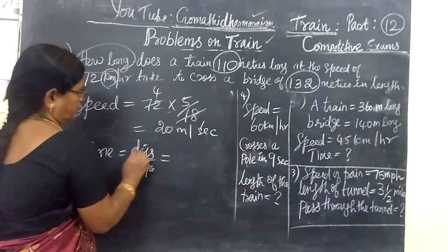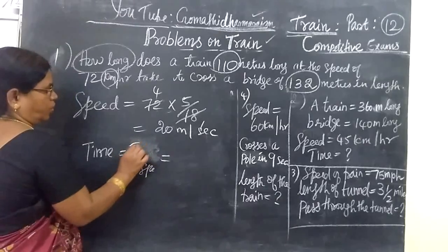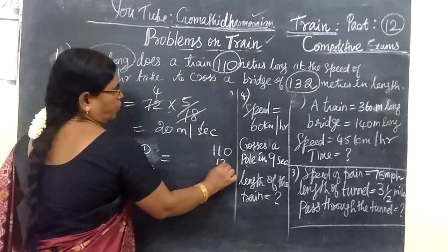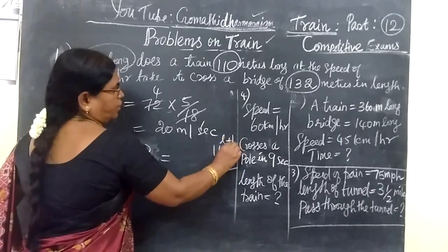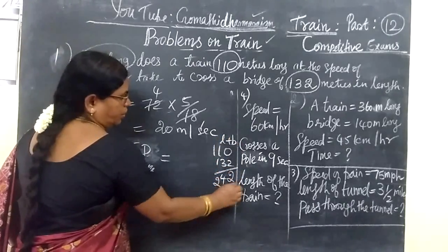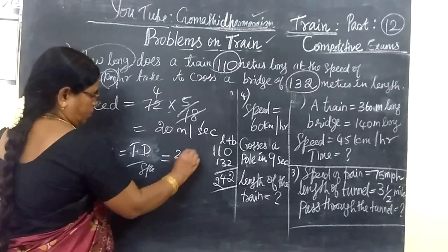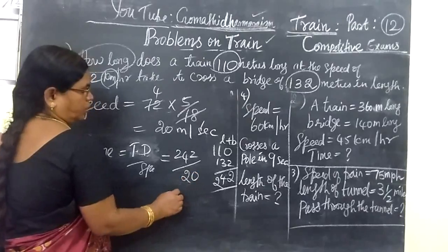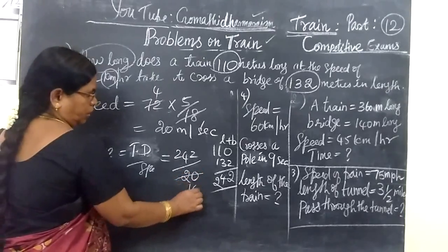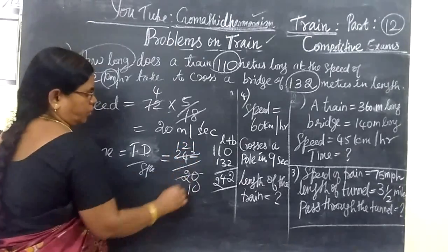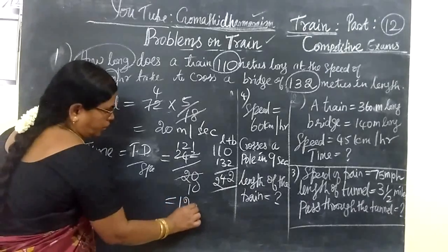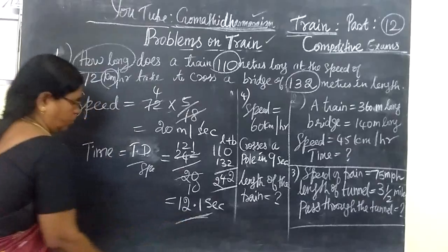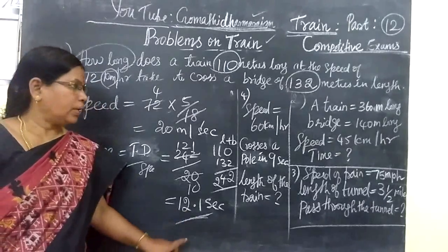Time equals distance by speed. So here you have to find distance by speed. The distance is total distance, 110 plus 132. That is M plus B. So 100 plus 132 equals 242. Speed equals 20. So 242 by 20 equals 12.1 seconds. Time taken is equal to 12.1 seconds.